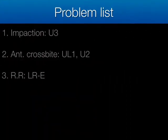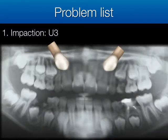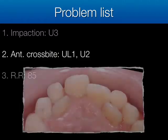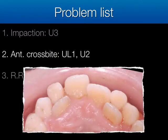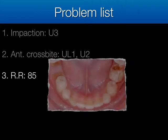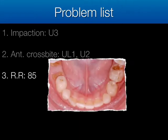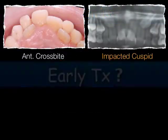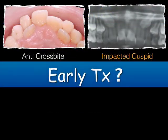The problems we found were: first, two impacted canines; second, three-incisor anterior crossbite; and the deciduous second molar was a residual root. Should we do early treatment in this case?